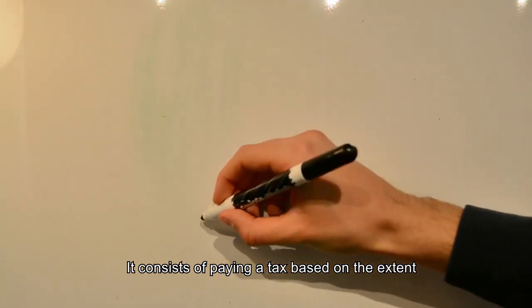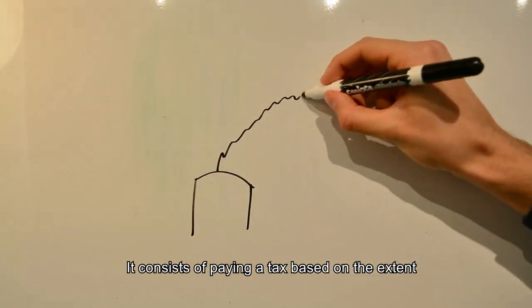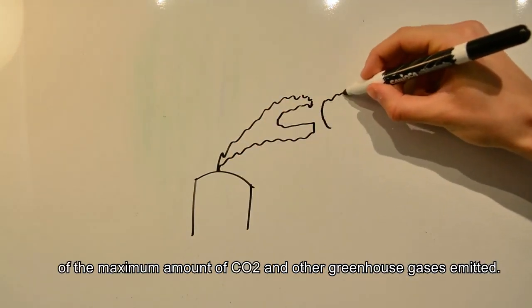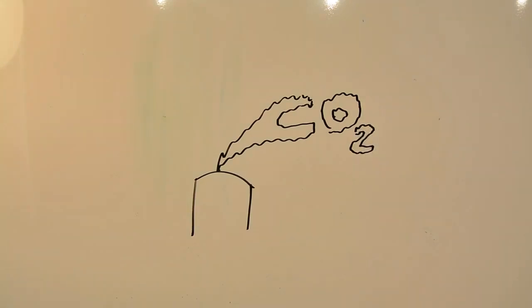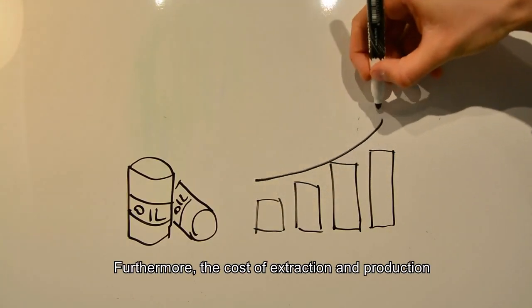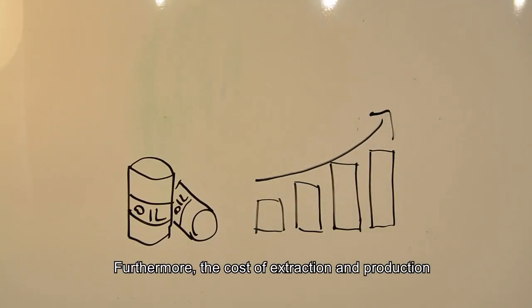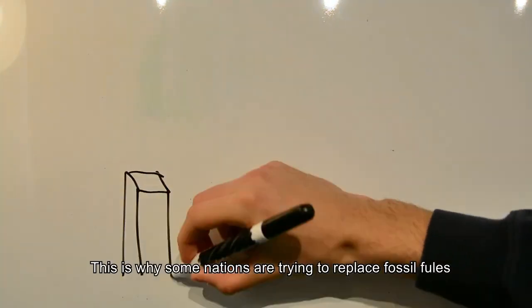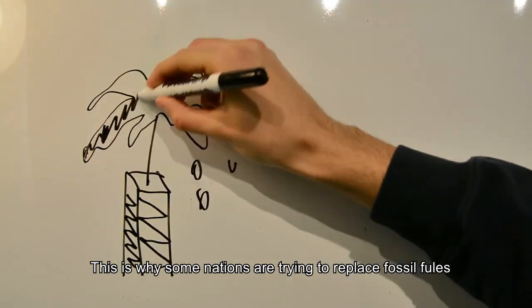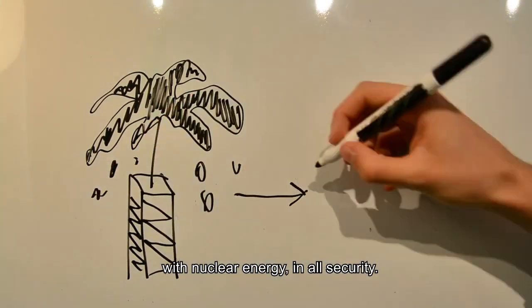It consists of paying a tax based on the extent of the maximum amount of CO2 and other greenhouse gases emitted. Furthermore, the cost of extraction and production of oil derivatives is increasing. This is why some nations are trying to replace fossil fuels with nuclear energy.